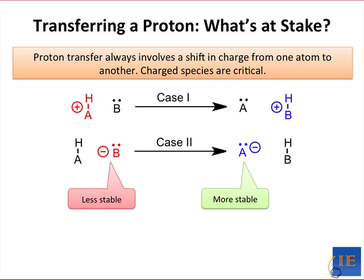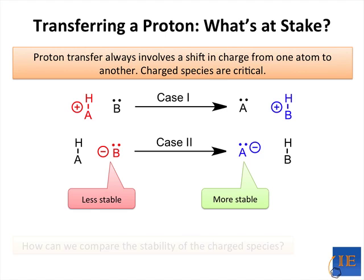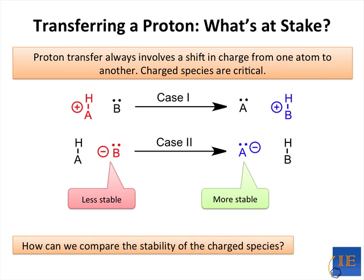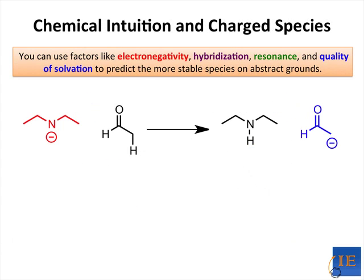So the question arises: how can we compare the stability of charged species? Well, one way is to use factors like electronegativity, hybridization, resonance, and quality of solvation to predict the more stable species on abstract grounds.